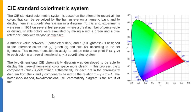The two-dimensional CIE chromaticity diagram was developed to display this three-dimensional color space more clearly. The Z component (blue) is determined mathematically for each dot in the chromaticity diagram from the X and Y components, based on the relation X + Y + Z = 1. The horseshoe-shaped two-dimensional CIE chromaticity diagram is the result.